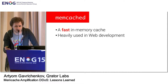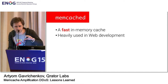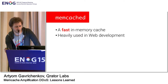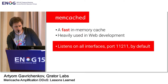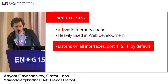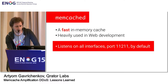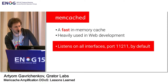Memcached is a database used in the web by software engineers. At the end of the day, it's a key-value store — a database that gives values by key and keeps everything in RAM. It's used as a fast in-memory cache, and that's why it's called that way. About ten years ago, the Memcached authors made a big mistake: by default, Memcached listens on all interfaces, including those that go outside — not only loopback, but external Linux or other machines.